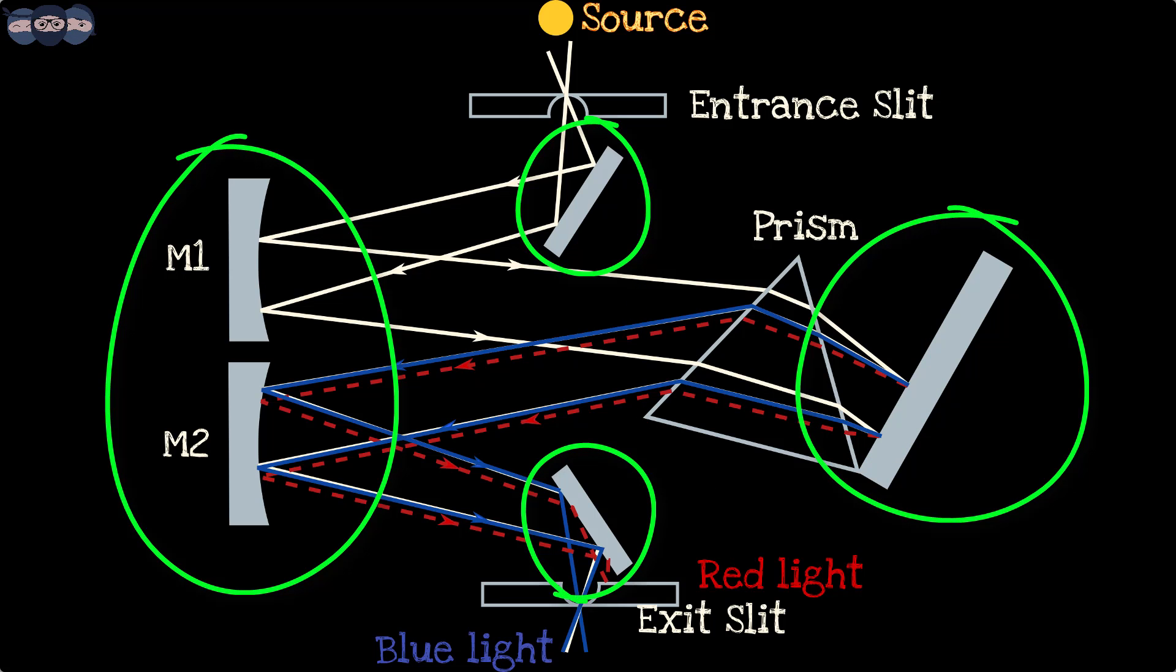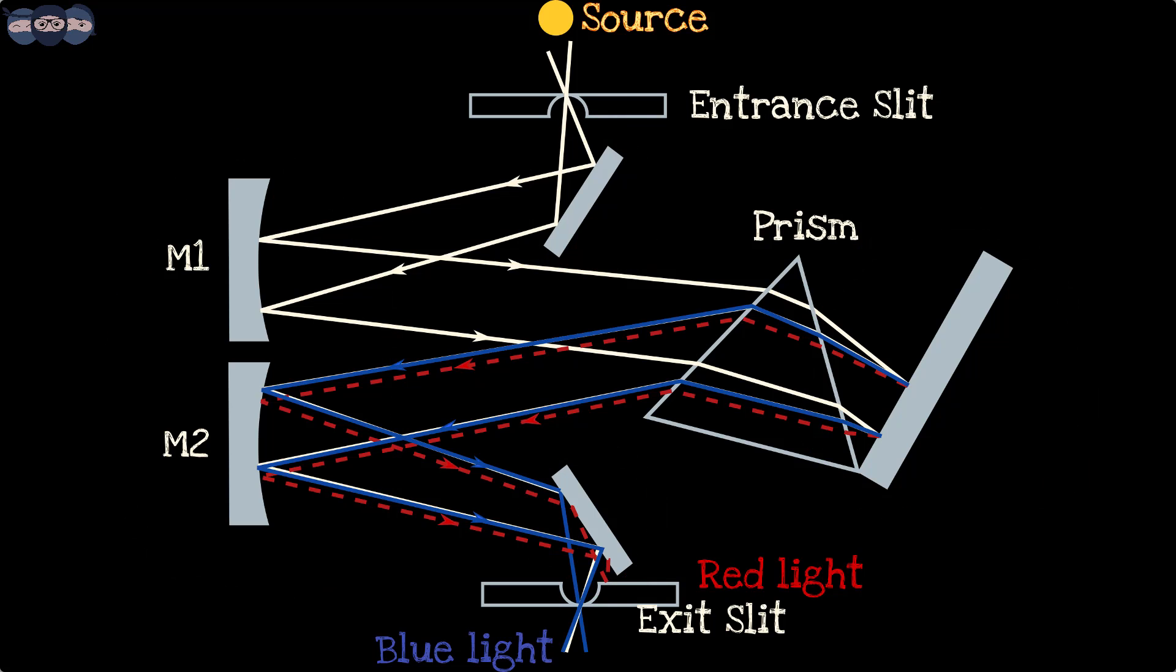This device has a prism and a set of mirrors which focus and collimate light from input slit to prism and from the prism to output slit.